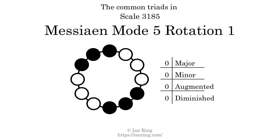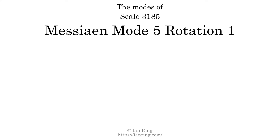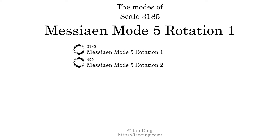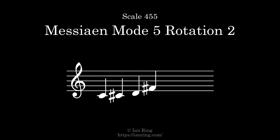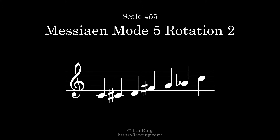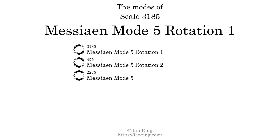There are no common triads present in this scale. This scale has 3 modes. The first mode is itself. The second mode is scale 455, also known as Messiaen Mode 5 Rotation 2. It sounds like this. The third mode is scale 2275, also known as Messiaen Mode 5. It sounds like this.